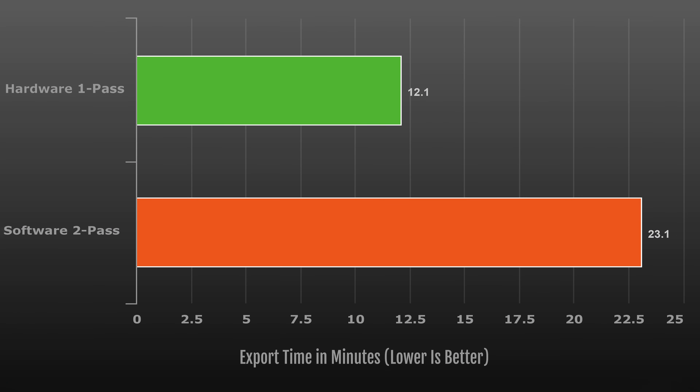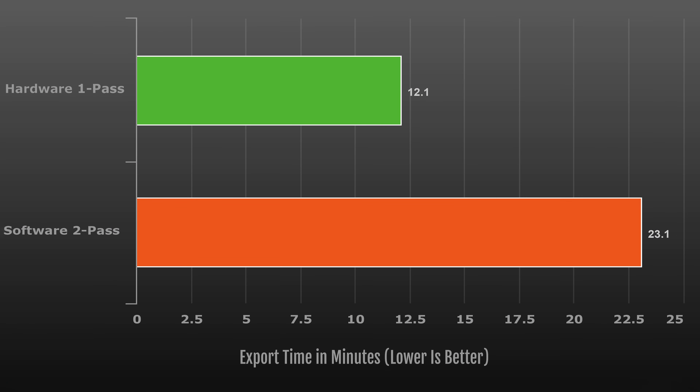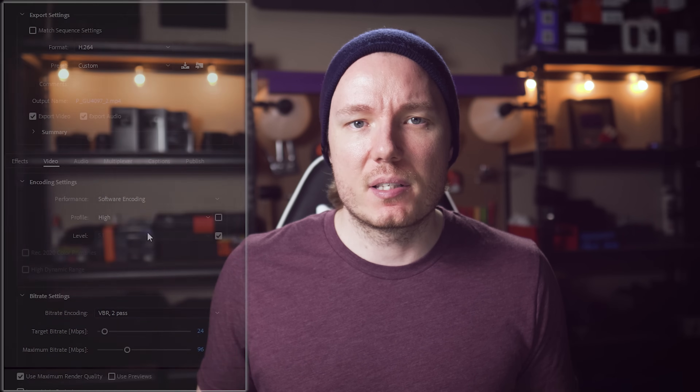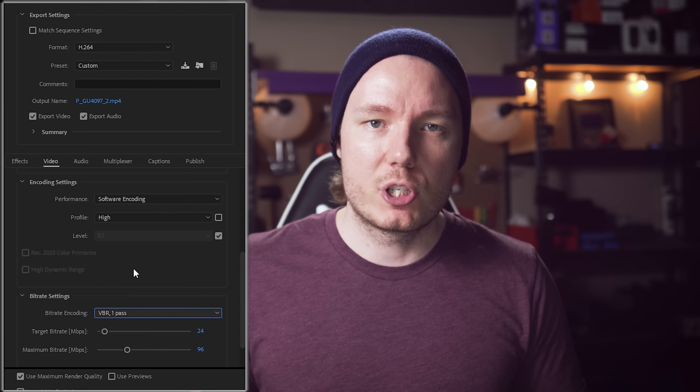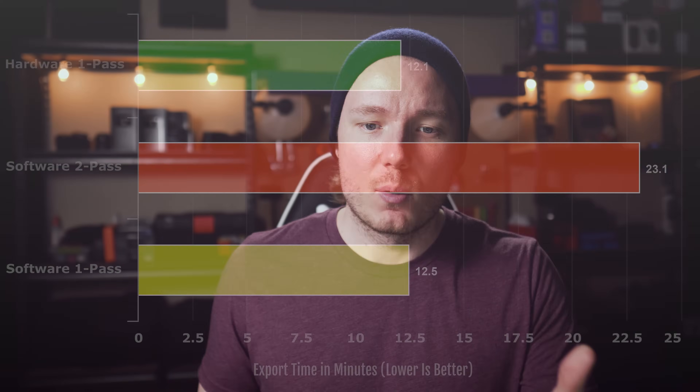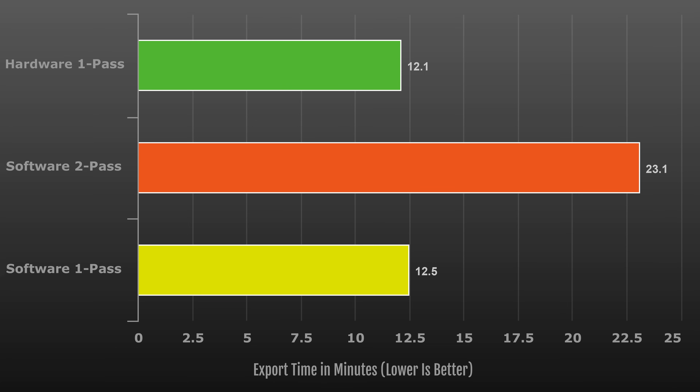Nobody really mentioned that it was only one-pass, and one-pass is much faster than two-pass. When I did the test, the results for hardware encoding were significantly faster than my 23.1-minute baseline — I did it in 12.1 minutes using the new Intel hardware acceleration, over a three-run average. That's nearly twice as fast, which would make for a great bar graph, but this isn't comparing apples to apples. So I tested again with software settings but this time using one-pass encoding, keeping everything the same — 24 megabits per second, VBR one-pass. The result was 12.5 minutes instead of 12.1 on hardware — only a few percent difference.